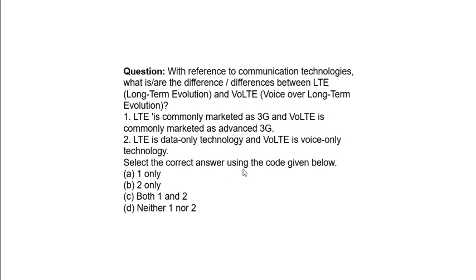Select the correct answer using the code given below. Your options are: 1 only, 2 only, both 1 and 2 only, neither 1 nor 2. Your answer is option number D — neither 1 nor 2.